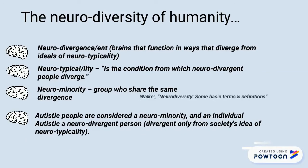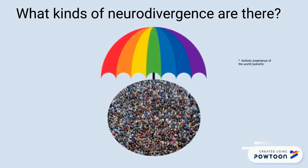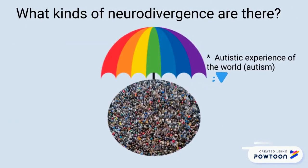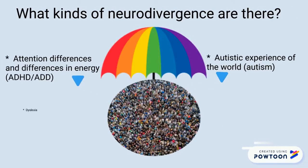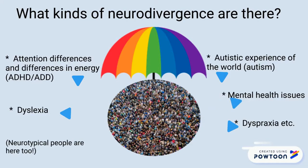Autistic people are considered a neurominority. There are many developmental and mental health differences that are examples of neurodivergence, such as autistic experience, attention differences, dyslexic and dyspraxic — all under the umbrella of neurodiversity, along with neurotypical people.